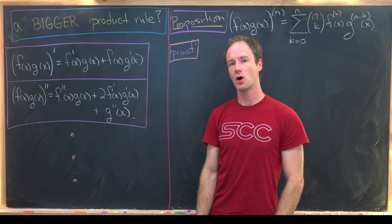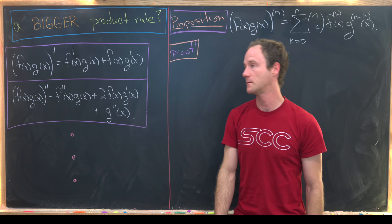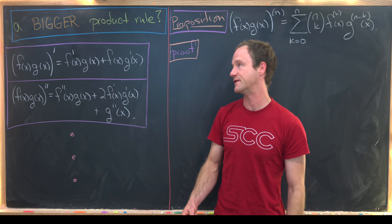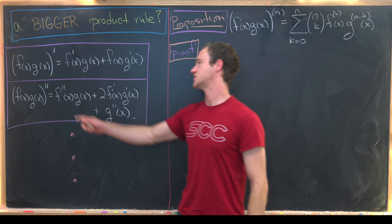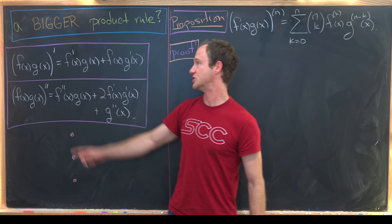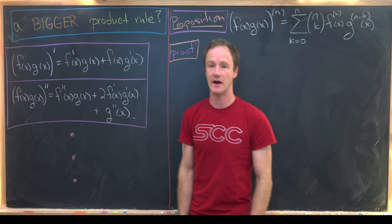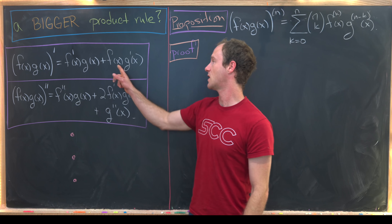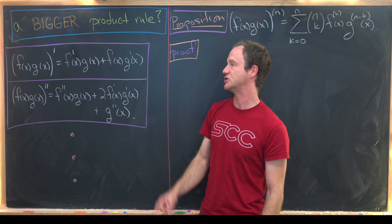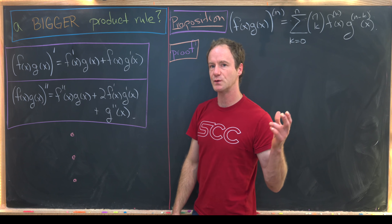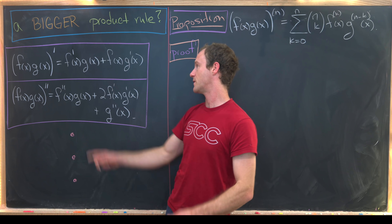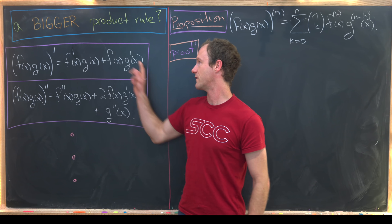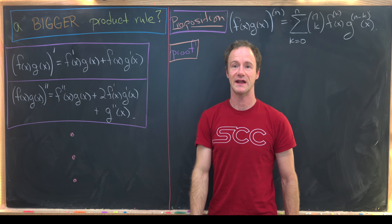Let's recall the standard product rule: the derivative of f(x) times g(x), which I'll denote by (f(x)g(x))′, equals f′g + fg′. In other words, we sum the product of f and g taking the derivative of one at a time.